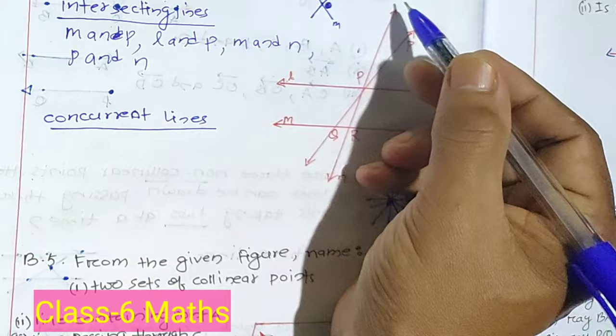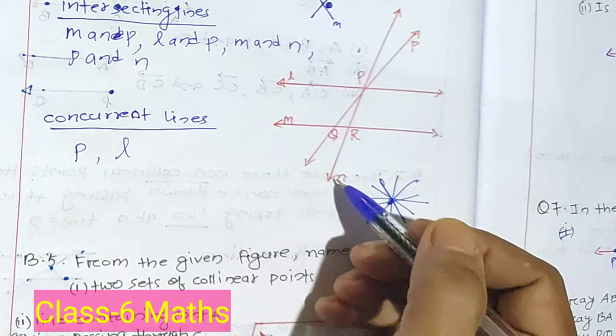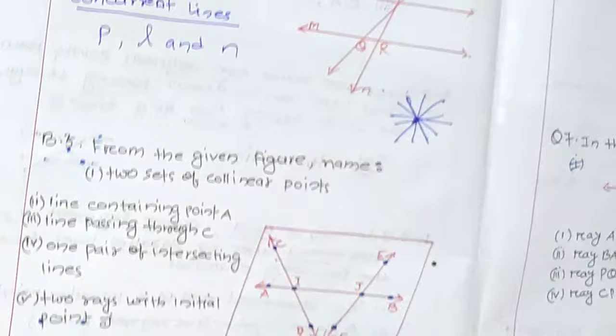So we write that — p, l, and n. They are all passing through this common point: p, l, and n. This is the simple solution of question number 4. Let us go ahead with question number 5.